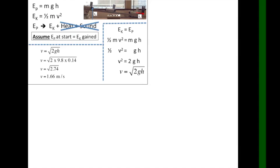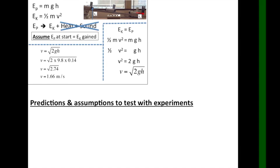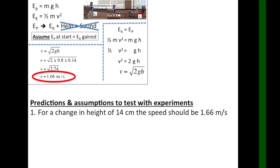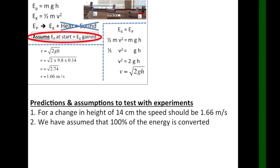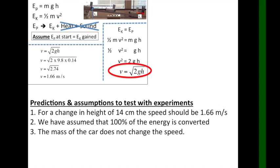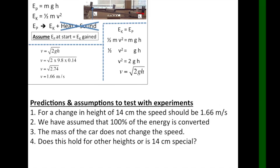So that's the theory and most of the math. Now we can actually go and test out some of the assumptions that we've made along the way, as well as some of our predictions. So the first one was for a change of height of 14 cm, the speed of the car should be about 1.66 m per second. Carry out the experiment several times and see how good that prediction is. We've also assumed that there was a 100% energy conversion. Test that. Third, the mass of the car doesn't actually determine the speed according to the proof. So see if that's true. And last of all, maybe the height of 14 cm is special. Maybe that's not a fair test, so try some of the other heights.